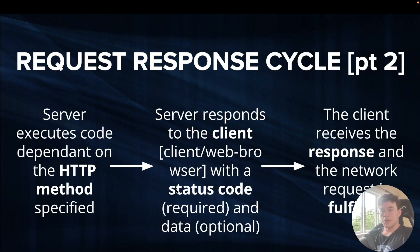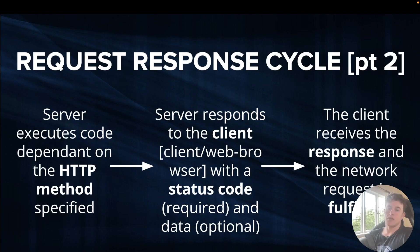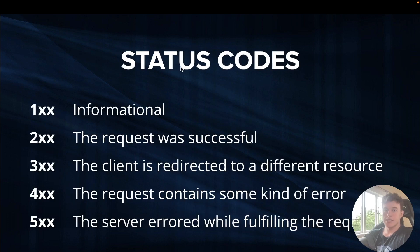After that body of logic has executed, the server responds to the client — potentially the web browser — with a status code, which is required, and potentially also a data response. The data is optional and could be JSON, a file, a redirection link, or other information. Just as the browser can send information to a server, the server can send information back. Finally, the browser receives the response and the network request is fulfilled.